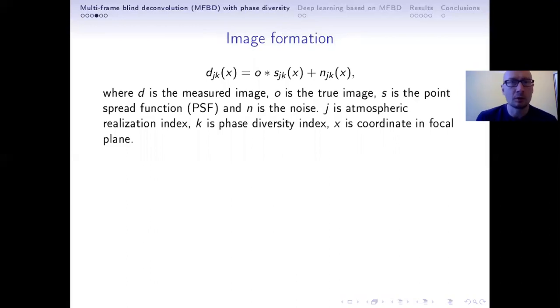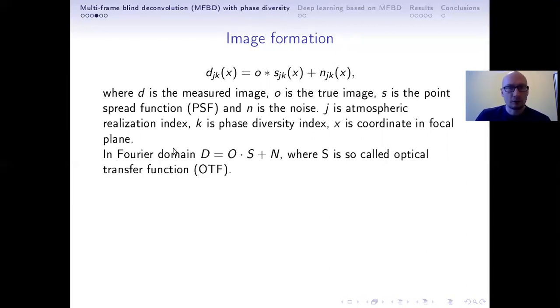Now we will go a little bit into the theory of image formation. Basically, the measured image on the sensor is a result of convolution of the true object with the point spread function, which is unknown, and there is an additive photon noise. So j here represents the atmospheric frame and k represents the phase diversity. In our case, this runs only from one to two. In Fourier domain, this same equation when omitting some details is very simple.